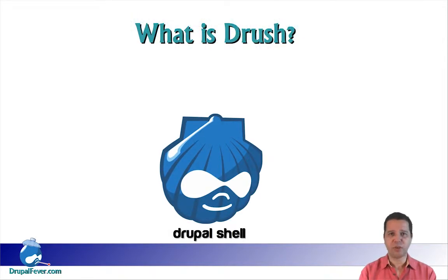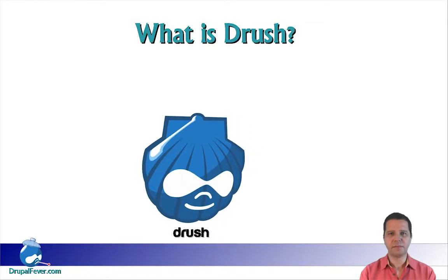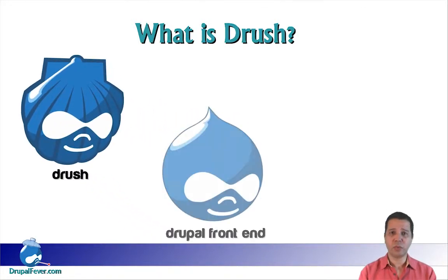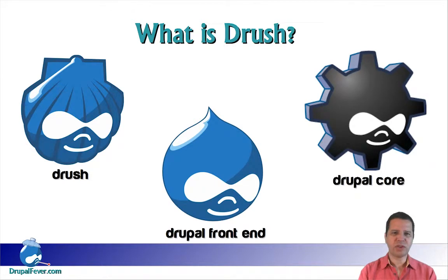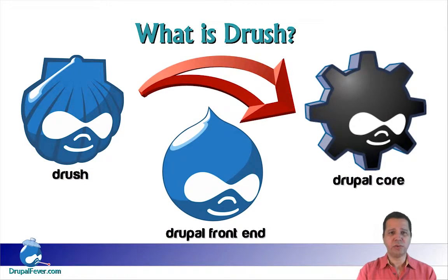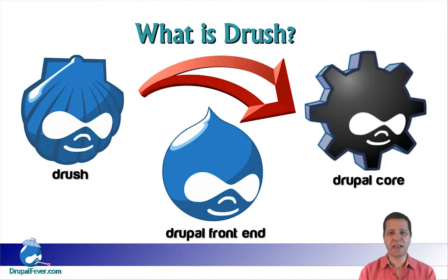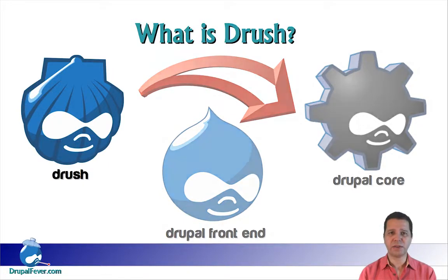Drush is a Drupal shell, hence the peculiar name. Drush runs on a terminal window. What Drush does is go around the Drupal front end of a website and communicate straight with Drupal core. This allows Drush to be very efficient in executing common Drupal maintenance tasks. In fact, Drush is very easy to install. However, it requires special attention when it's done in a Linux environment.